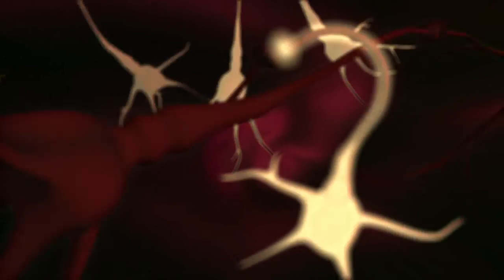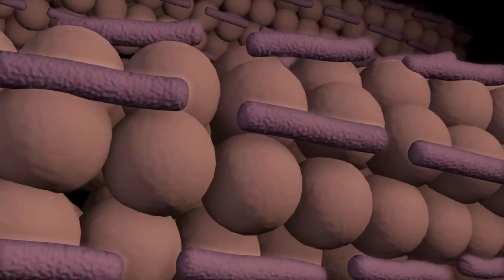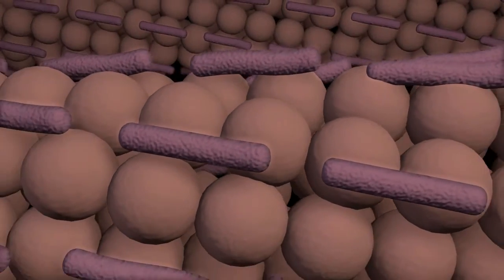Alzheimer's spreads from one area of the brain to another via a vast network of connected cells. These cells are isolated and destroyed by a build-up of tau protein.